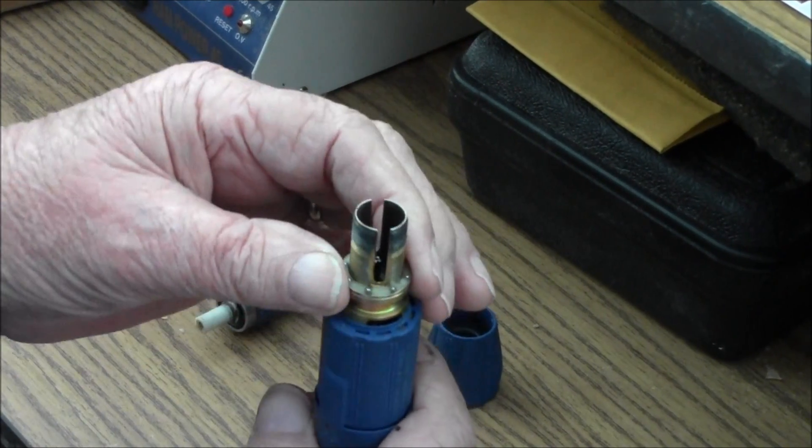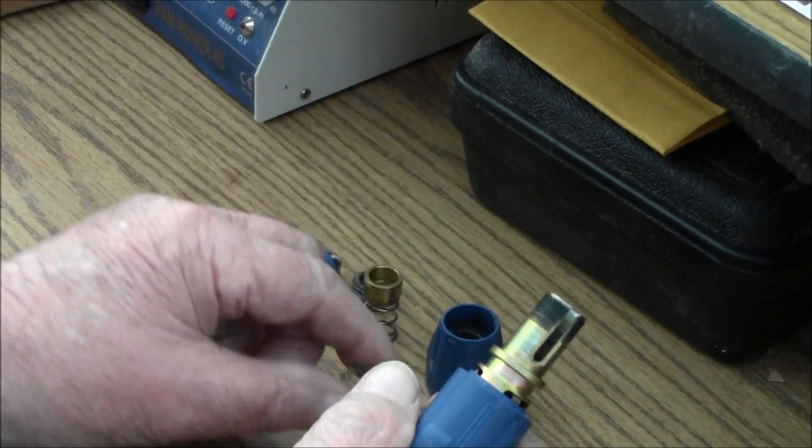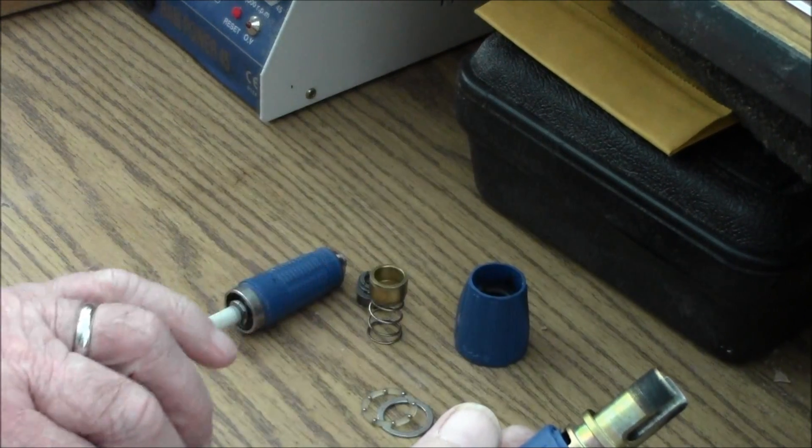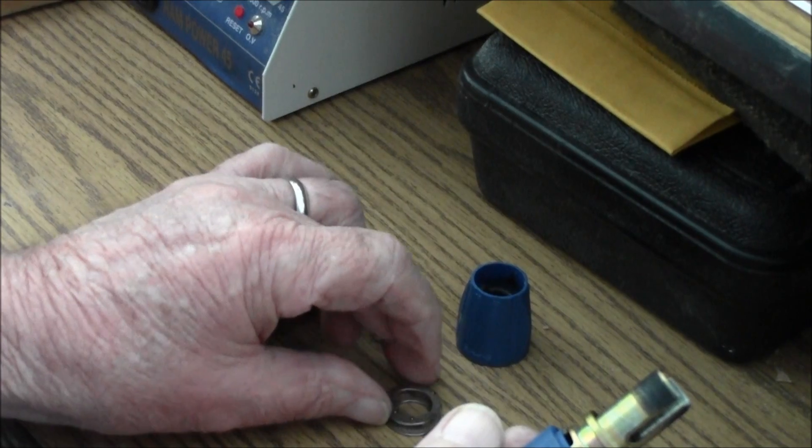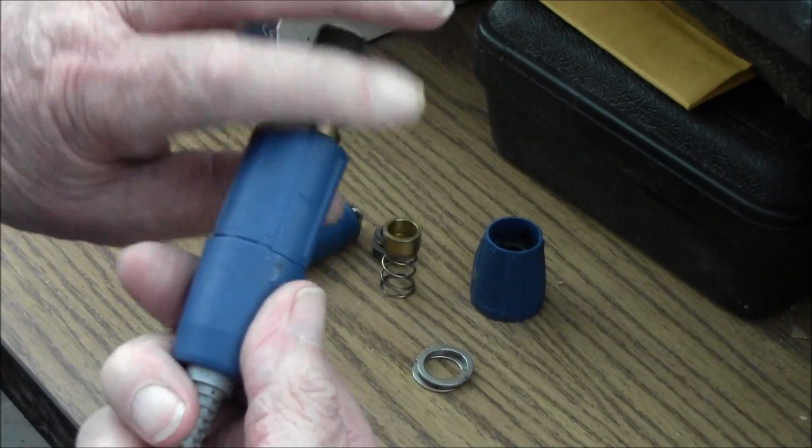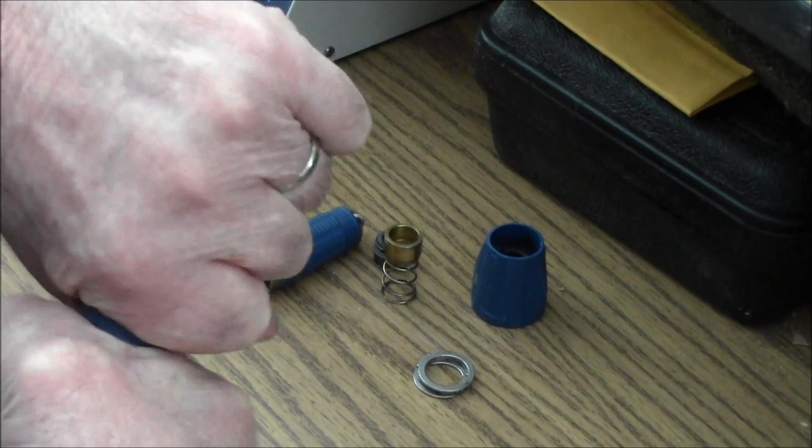That gets the top part. You got a bearing here. One part of that stayed inside here. You got two metal washers and one washer with rollers in it. Then this piece just twist off.